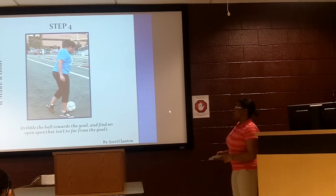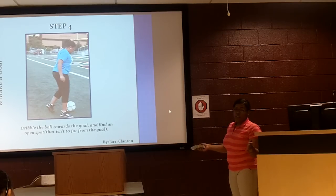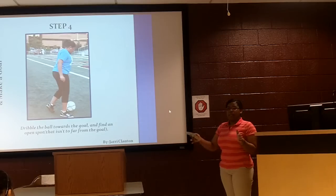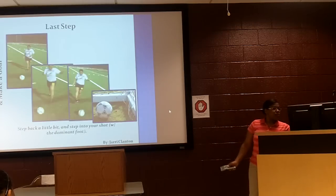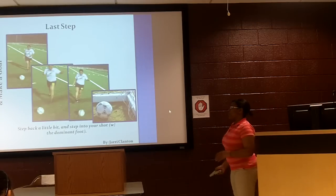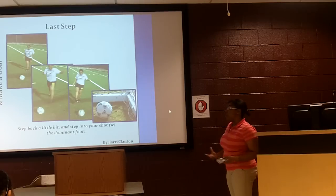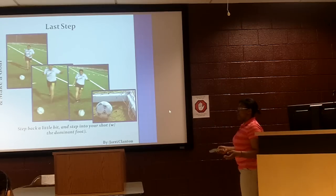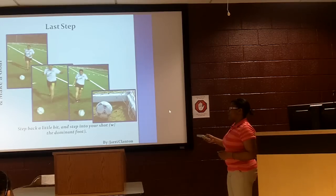Step four: dribble the ball towards the goal and find an open spot that isn't too far from the goal. You don't want to be too far away, and you don't want to be too close — at least be in the middle, or just a little bit up there. Then step back a little bit and step into your shot with your dominant foot, because it's your most powerful foot. In this picture I'm stepping back, in this one I'm ready to aim, in this one I kick the ball, and in the last one the ball is in the goal.